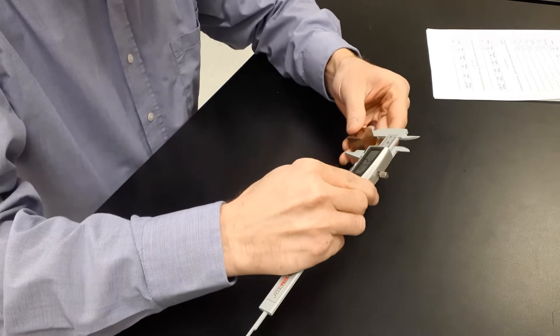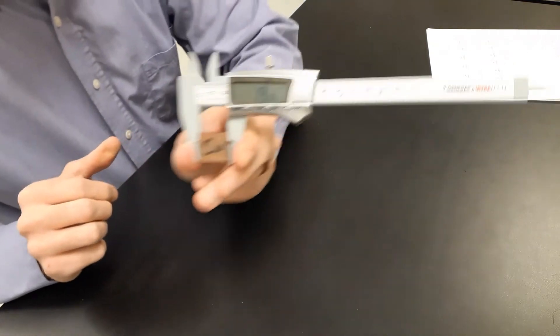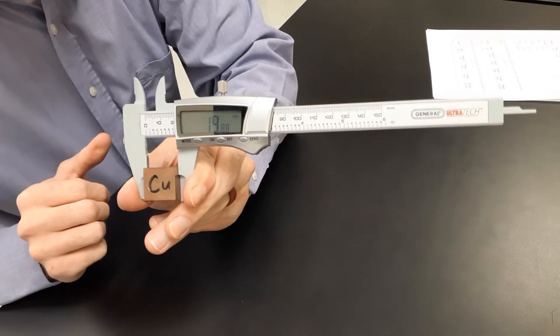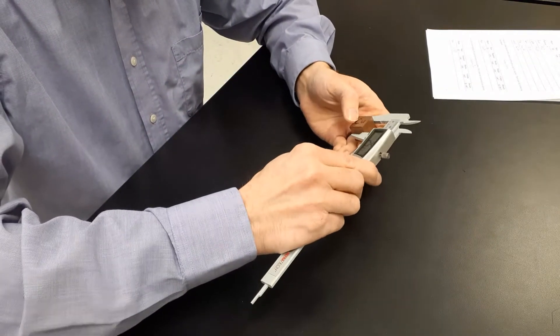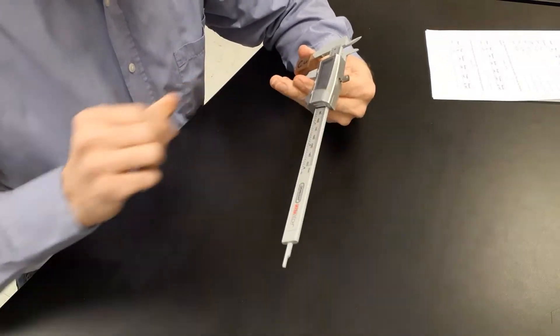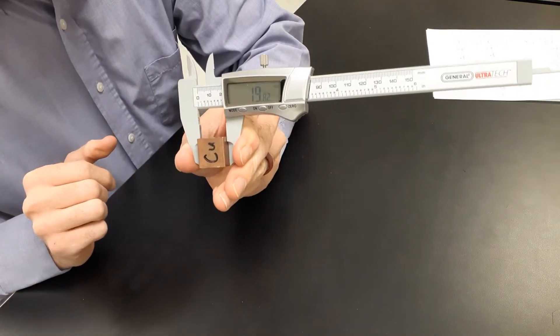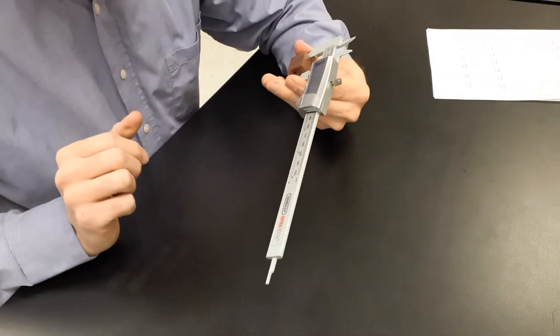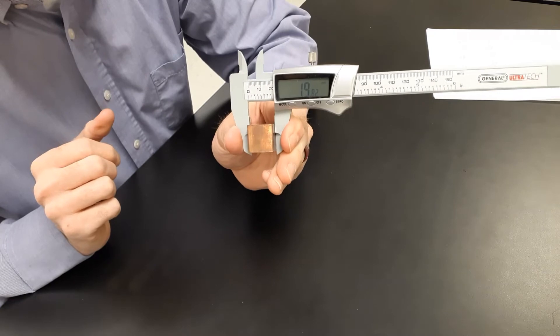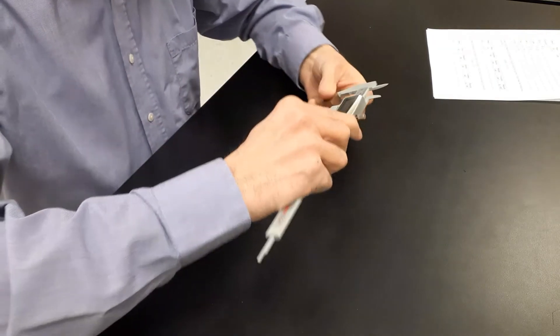All right, that takes care of that. Now copper. So copper, first measurement, 19.88 millimeters, 19.88. And then one more measurement for the copper block. Also 19.82 millimeters, 19.82 millimeters. All right, that's copper.